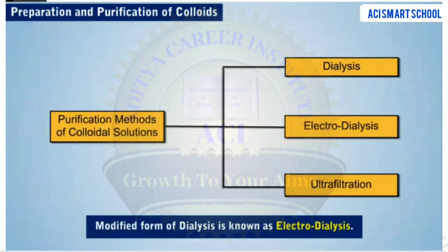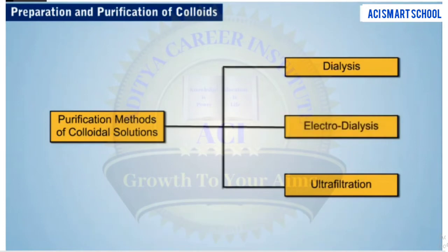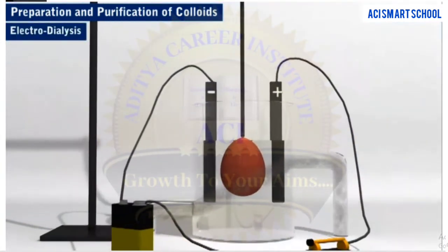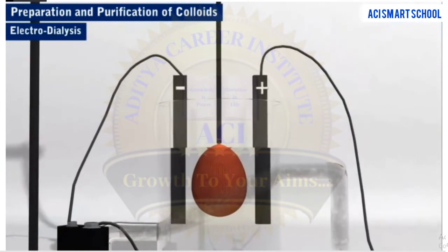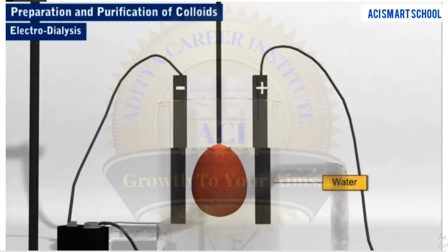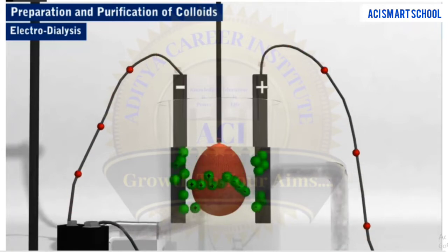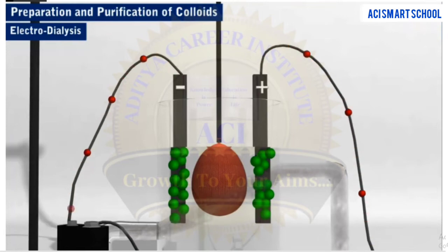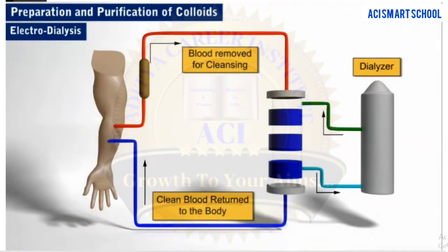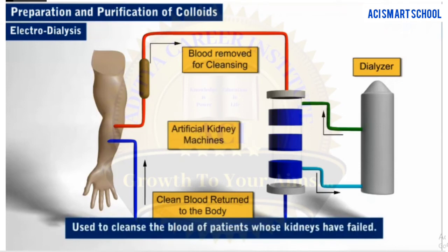A modified form of dialysis is known as electrodialysis. The ordinary dialysis process is a slow process. To hasten the process of purification, dialysis is carried out by applying an electric field. In this process, two electrodes are placed in the water compartment. When an electric field is applied across the electrodes, the ions of the electrolyte, present as the impurity, diffuse towards the oppositely charged electrodes at a faster rate. An important application of dialysis is in artificial kidney machines, where it is used to cleanse the blood of patients whose kidneys have failed.